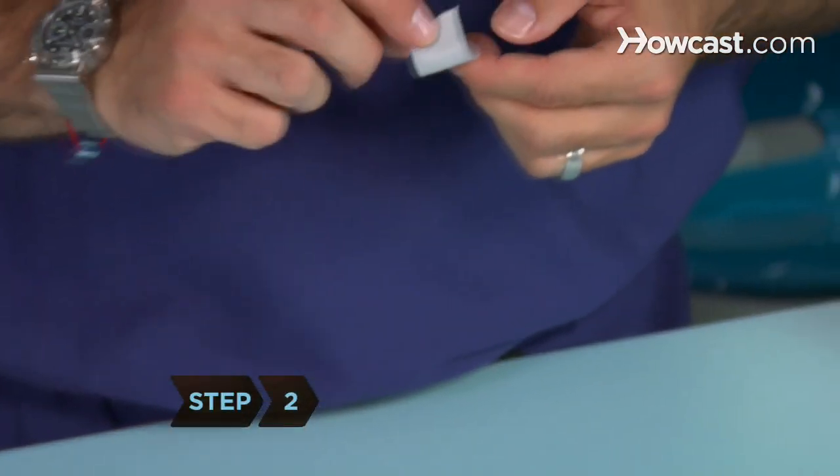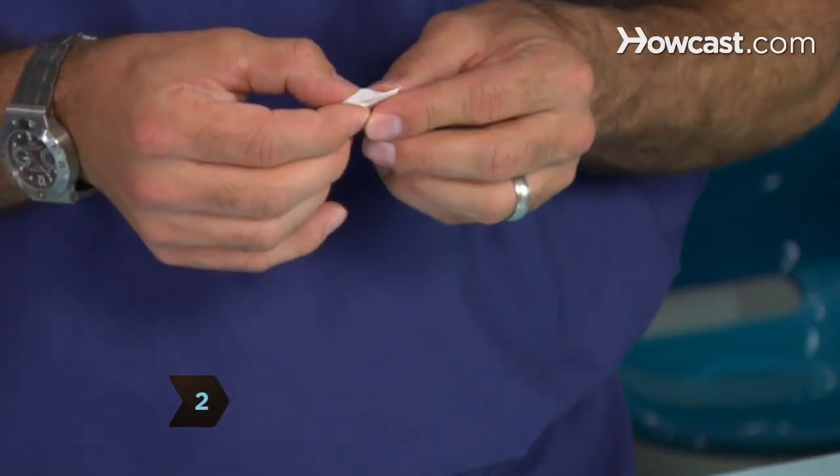Step 2: Fold the piece of tape in half so that the non-sticky sides are against one another.